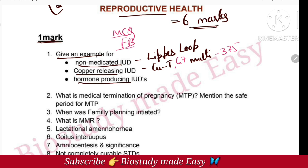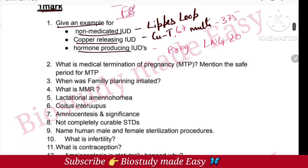For hormone-producing IUD, the examples are Progestasert and LNG-20. These are the hormone-producing IUDs — very important examples to remember.